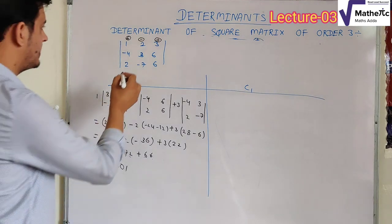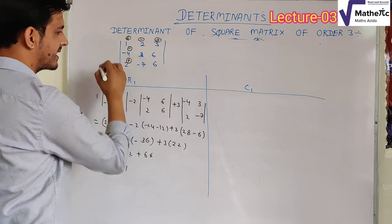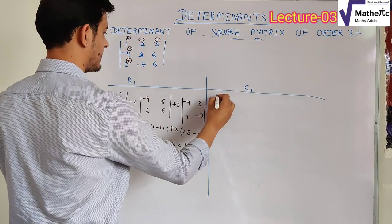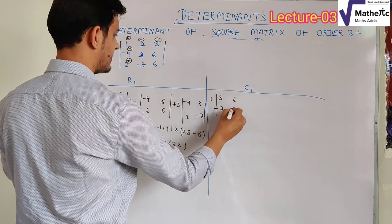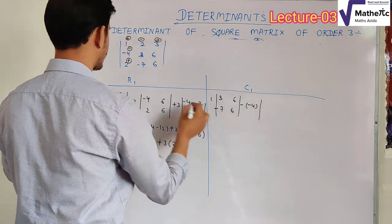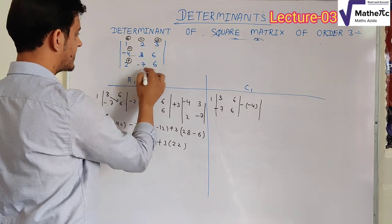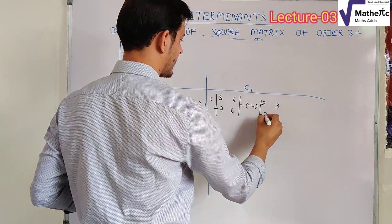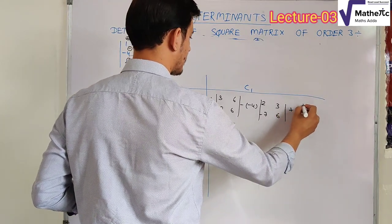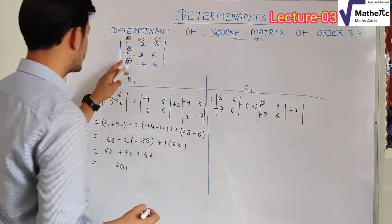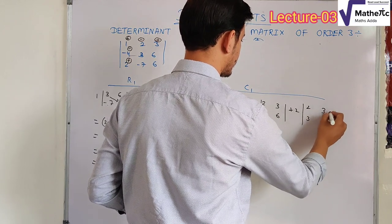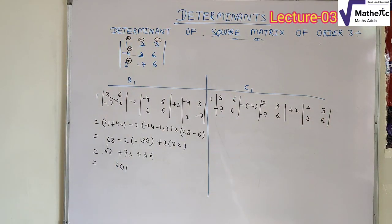Now expanding with respect to C1, the signs are plus, minus, plus. So we have: +1 × (minor of a11) − (−4) × (minor of a21) + 2 × (minor of a31). The minor of a11 deletes row 1 and column 1, giving elements 3, 6, −7, 6. The minor of a21 deletes row 2 and column 1, giving elements 2, 3, −7, 6. The minor of a31 deletes row 3 and column 1, giving elements 2, 3, 3, 6.